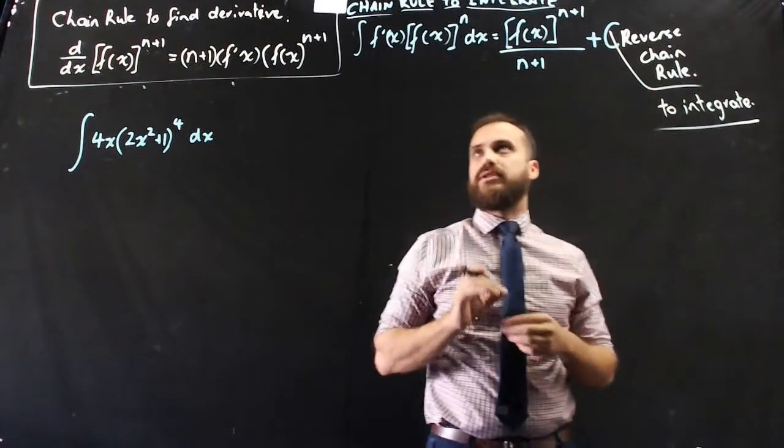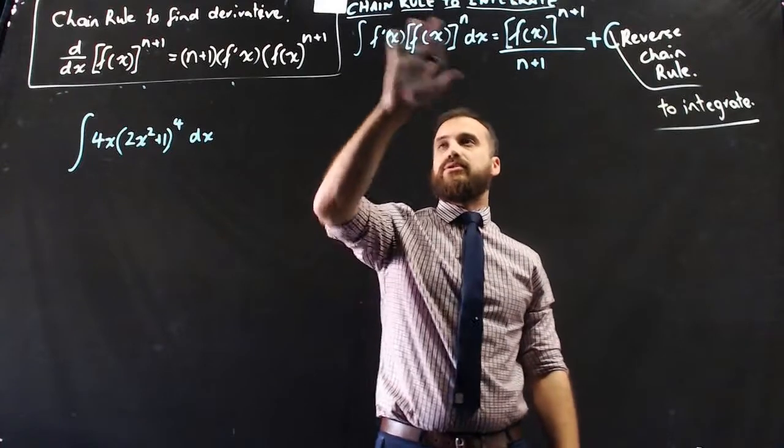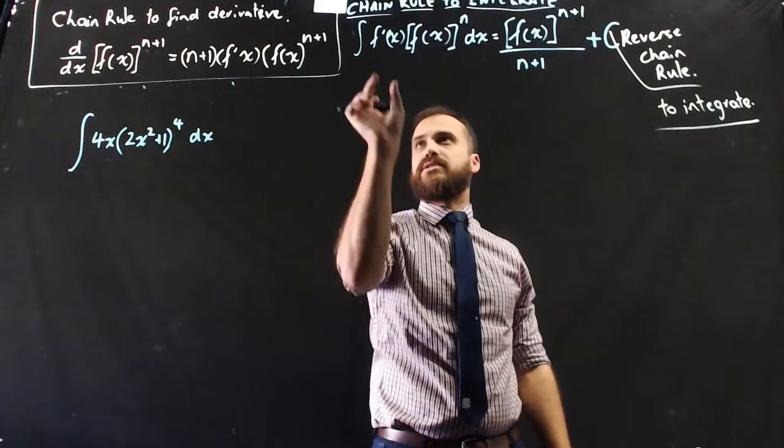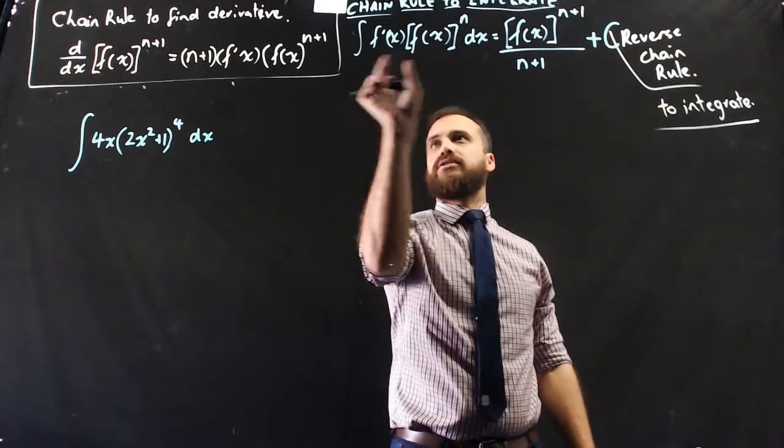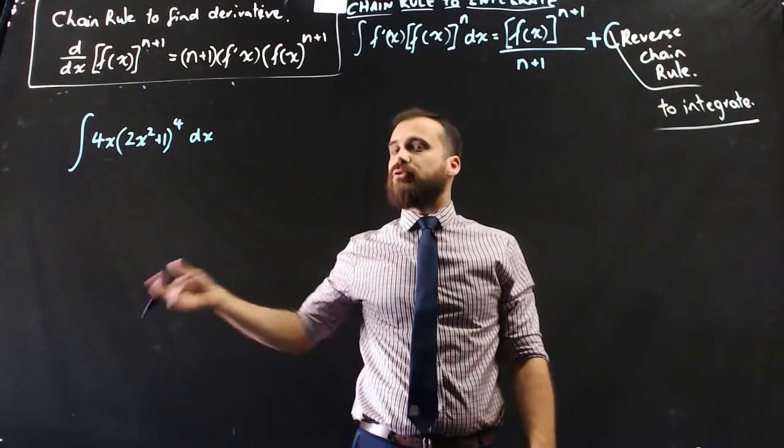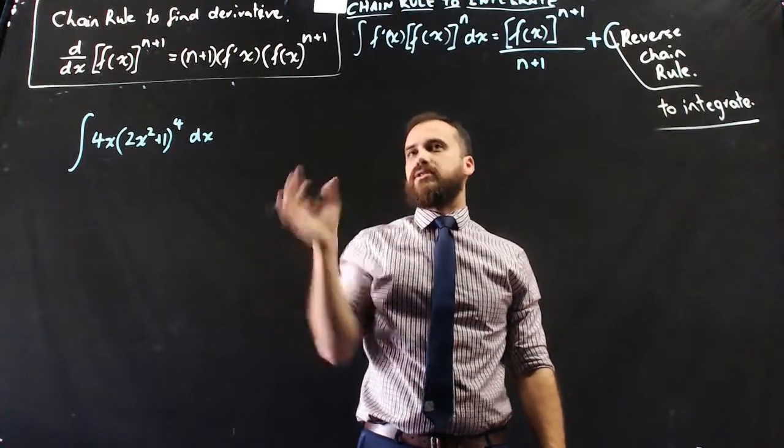Now, important to note, in order for us to use the chain rule to integrate, this is called the integrand. In the integrand, you have to either be able to see the derivative of a function or a multiple of the derivative of a function. Because if there's a multiple of the derivative, we can kind of put that outside and then work from there.